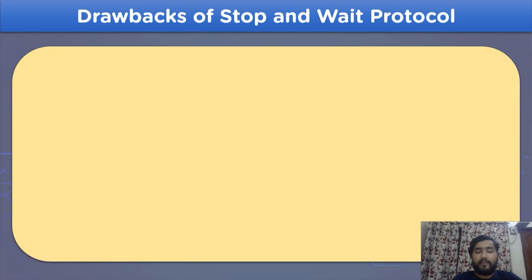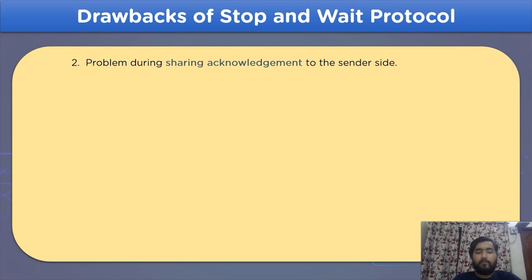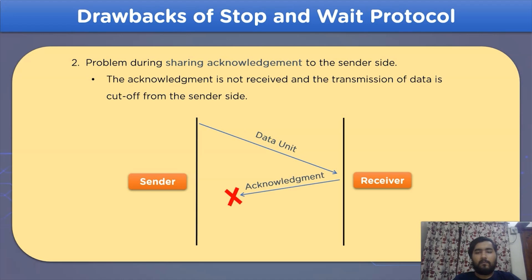The second drawback is related to acknowledgement transmission. During the transmission of the acknowledgement signal, due to network issues, the acknowledgement signal is disrupted and the transmission is terminated. This can arise due to various reasons occurring in the network channel.